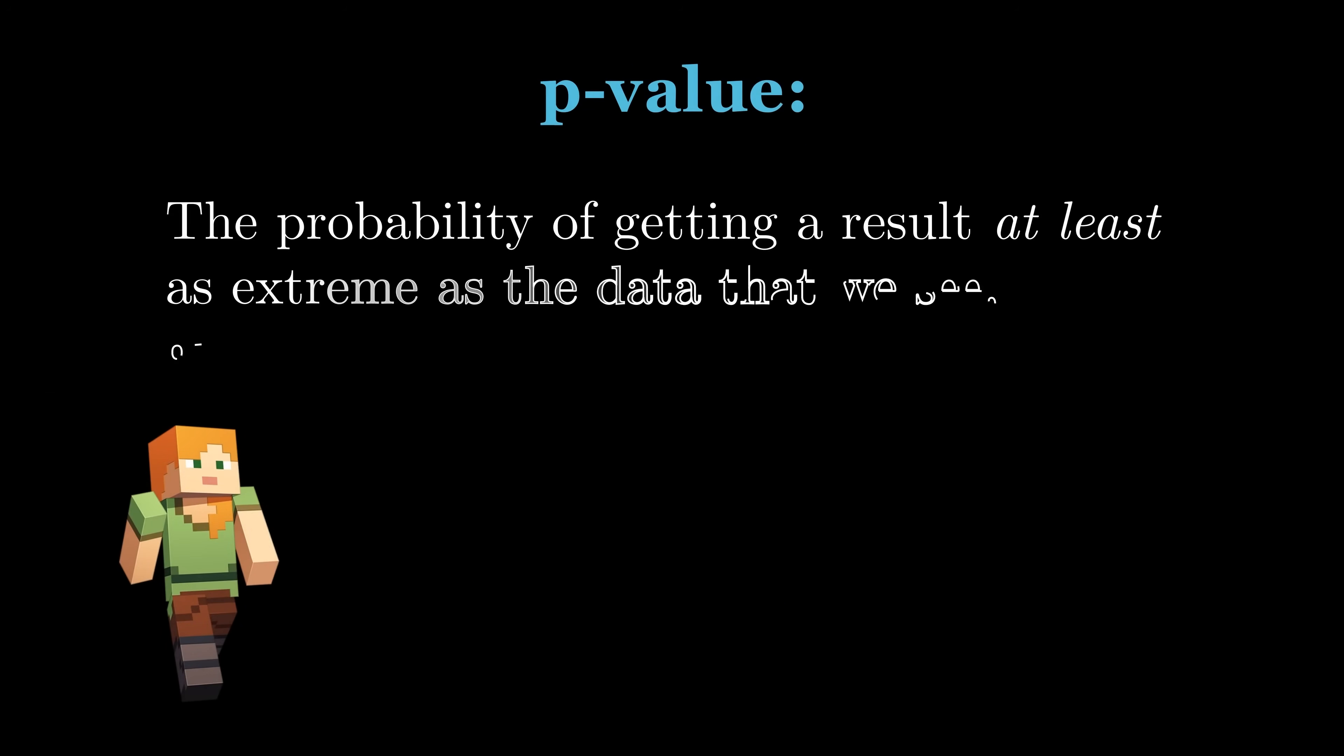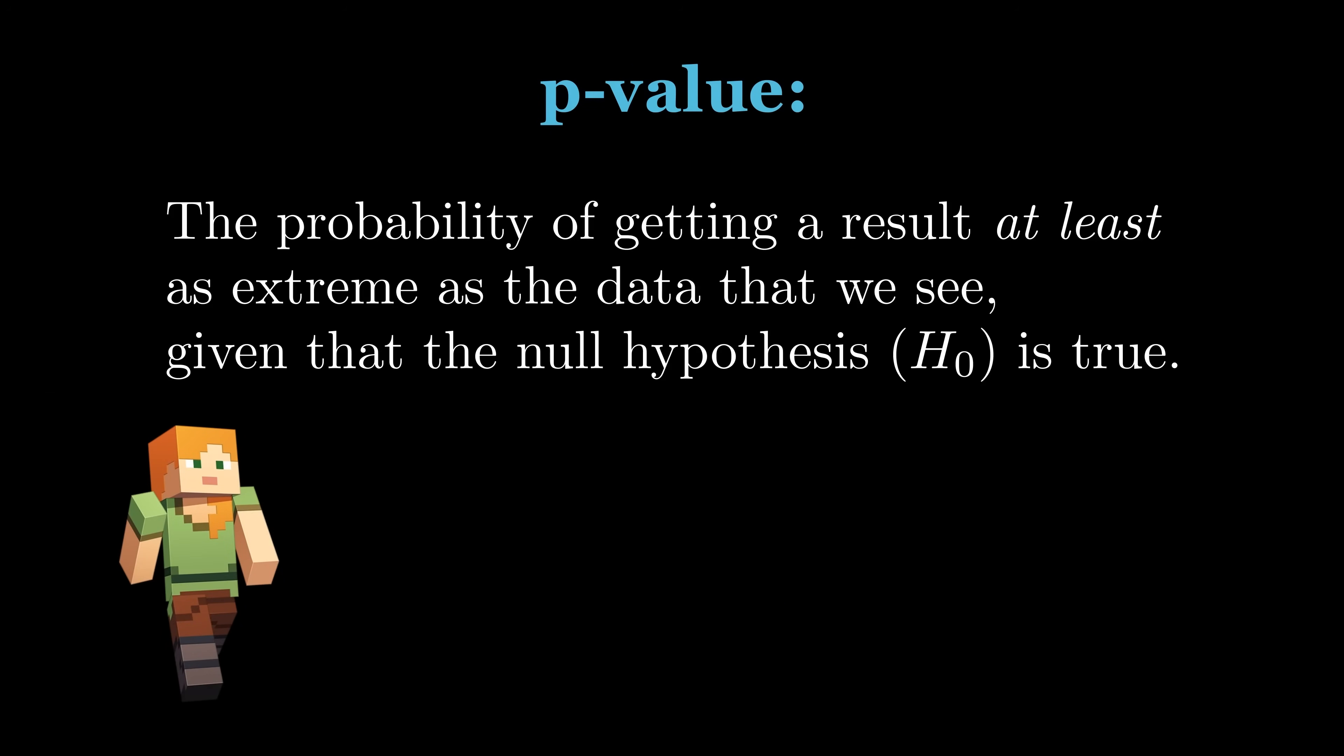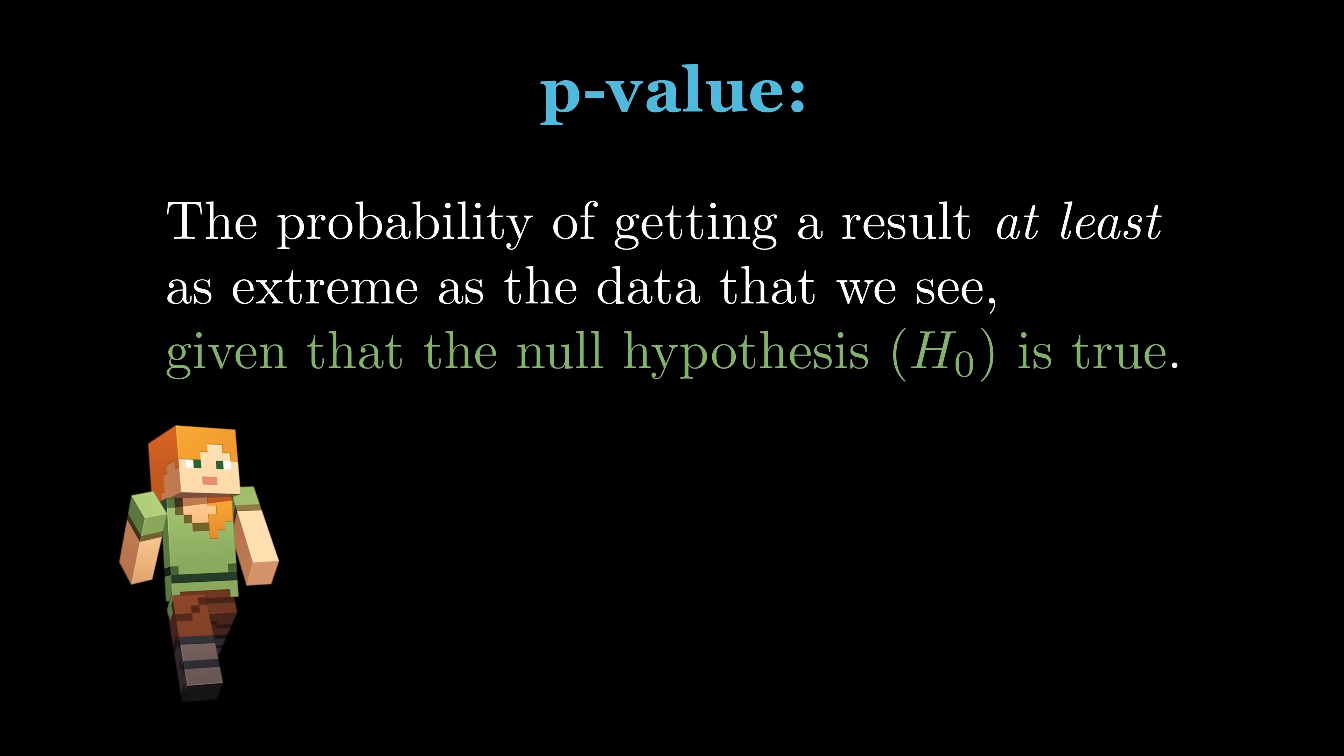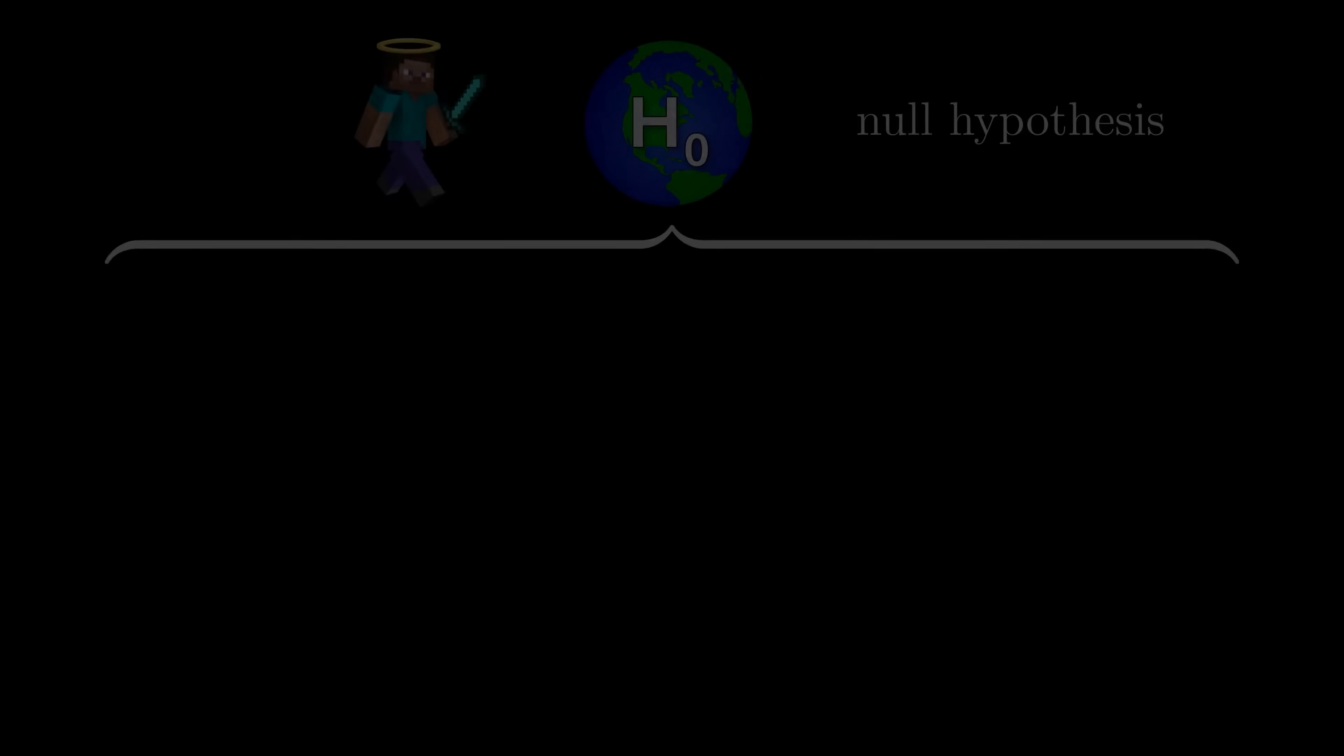Now it's time to return to our p-value definition. This is the probability, under the null hypothesis, of getting a result at least as extreme as the observed result. Armed with the binomial distribution, we're now ready to calculate this probability.